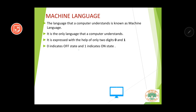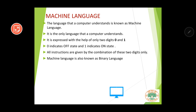Zero means off state and one means on state. All instructions are given by the combination of these two digits only. Whatever instructions we give to the computer in machine language, we give them using only zero and one. Machine language is also known as binary language — 'bi' means two. Since machine language consists only of the two digits zero and one, it is also known as binary language.